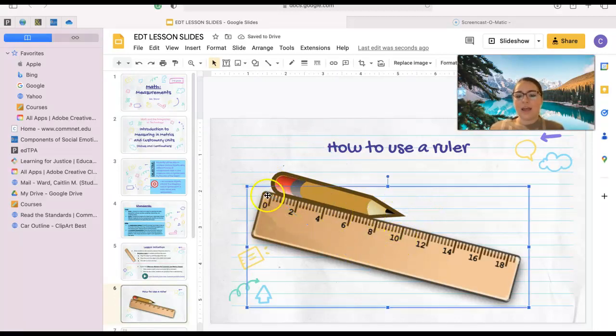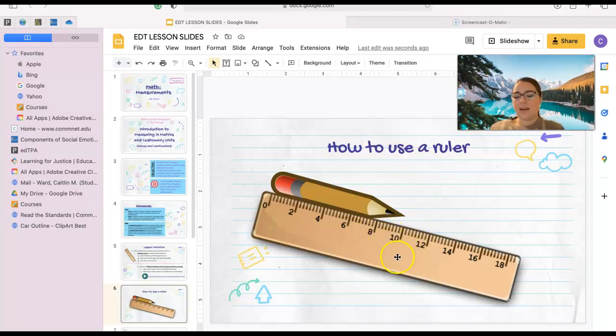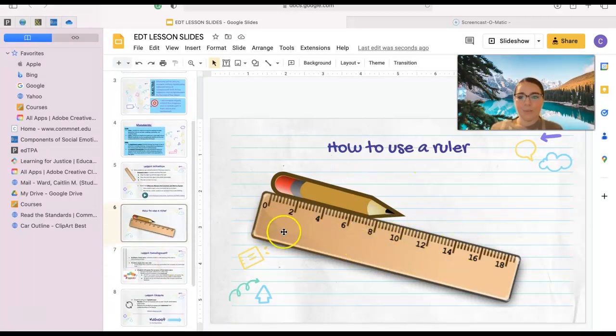We want it to be at the zero, that way we can measure. And then when measuring, we find the end and we can see that this pencil is 10 inches or centimeters - it depends what you are measuring and what unit you are asked to measure in.